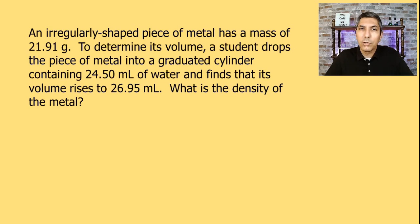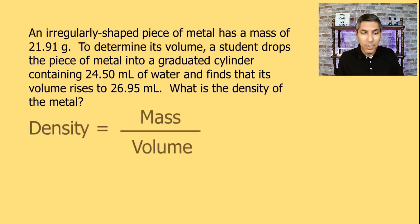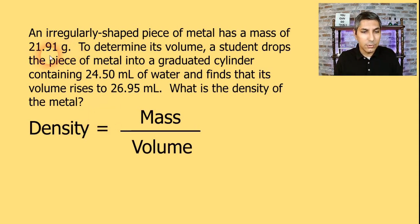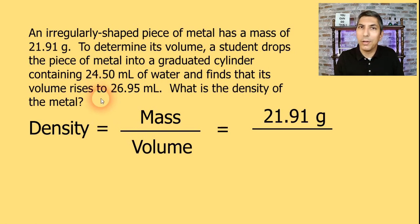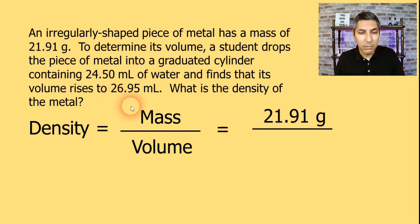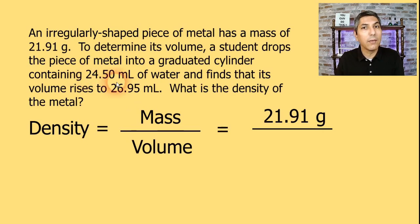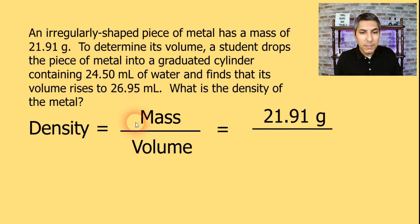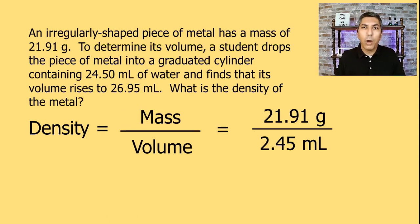What is the density of the metal? We still use the same equation: density equals mass divided by volume. The mass is 21.91 grams, so that goes in the numerator. Since it's irregularly shaped, we use water displacement to find the volume. We take the final volume — 26.95 milliliters — and subtract the initial volume of 24.50 milliliters, giving us a volume of 2.45 milliliters. Water displacement is a very common and simple way to find the volume of any object: put some water in a graduated cylinder, take a measurement, drop the object in, and see by how much the water level rises.